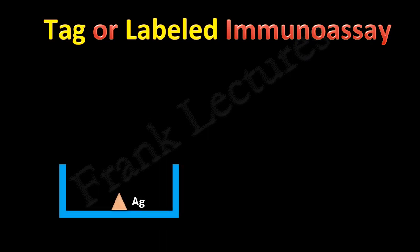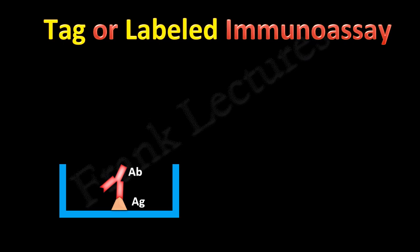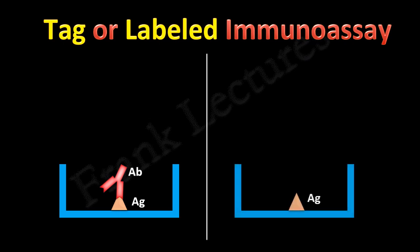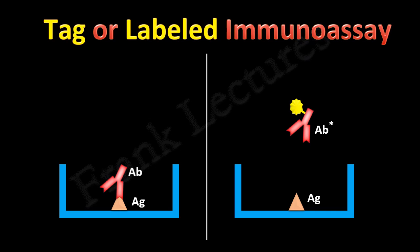Suppose this is an antigen immobilized in a microtiter well, and this is the specific antibody to the given antigen. We add this antibody to the microtiter well. Since this antibody is specific to the given antigen, it binds to the antigen. But this binding is not visible to us, though it took place. So what can we do to confirm that binding has occurred? We use a tagged or labeled antibody — one that is covalently bound to a detectable tag. This tag can be a radioisotope, enzyme, etc.